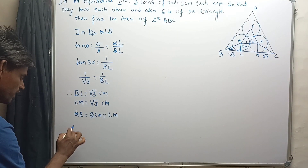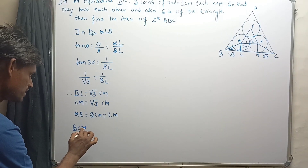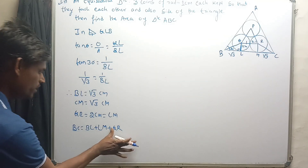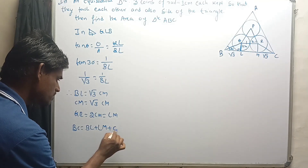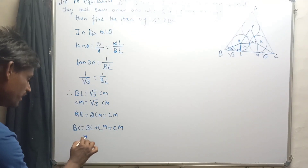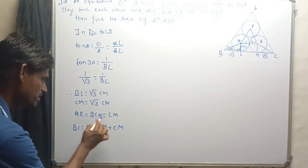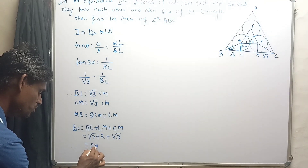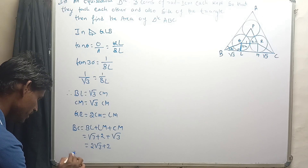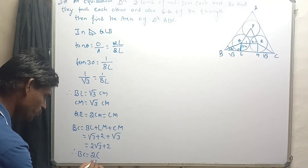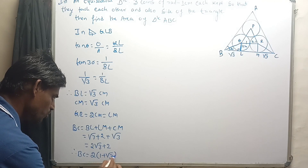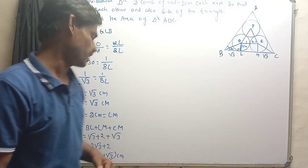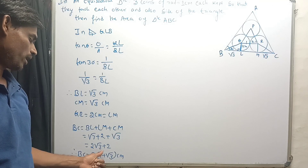Now let's find the length of BC. BC equals BL plus LM plus CM. We have BL = √3, LM = 2, and CM = √3, so BC = √3 + 2 + √3 = 2√3 + 2. We can write this as 2(1 + √3) centimeters. So we have the side length of this equilateral triangle ABC, which is 2(1 + √3) centimeters.